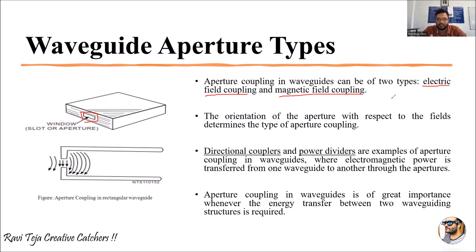Directional couplers and power dividers are the best examples of aperture coupling in waveguides. Electromagnetic power or energy is transferred from one waveguide to another using these slots, windows, or apertures. Aperture coupling in waveguides is especially important whenever energy is transferred from one waveguide structure to another. In summary, aperture types are defined with respect to electric and magnetic fields, where apertures are small cuts, holes, slots, or windows through which energy can be transmitted from one waveguide to another.